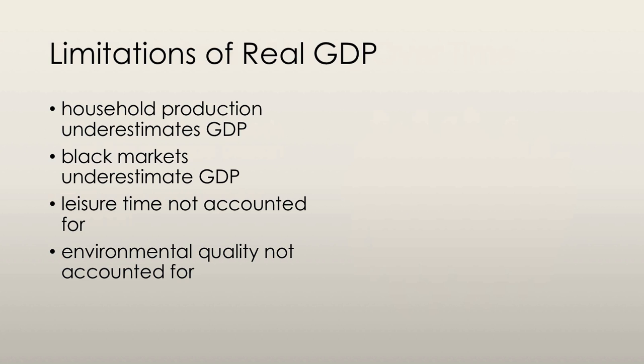We can't really measure the standard of living accurately without counting for leisure time. We also have environmental quality, and this is extremely important. Economic activity directly influences the quality of the environment. Depletion of non-renewable resources, clearing of forests — these things have major environmental consequences, but none of these are actually taken into account. So GDP is reported as a lot higher than it should be because of the destruction of the environment.